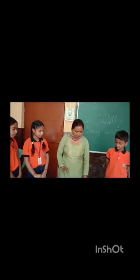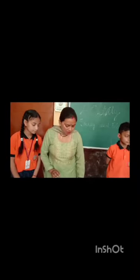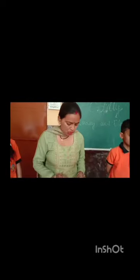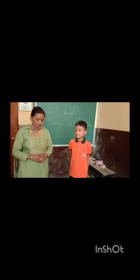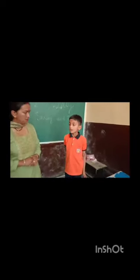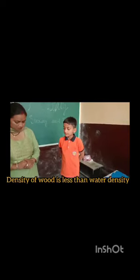Here I take water and some objects which I will add on this water and you will tell me what happened to this object. Here I take a piece of wood and let's see what happened. Why is this floating? This is a lighter object and the density of this is less than water density.